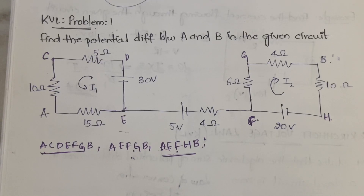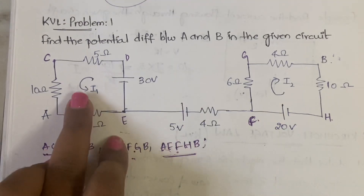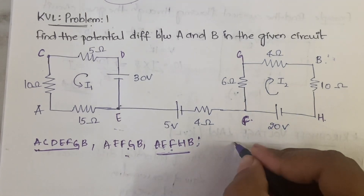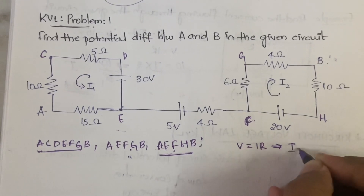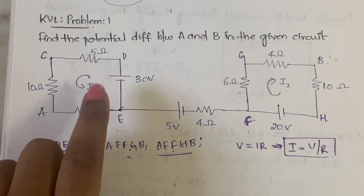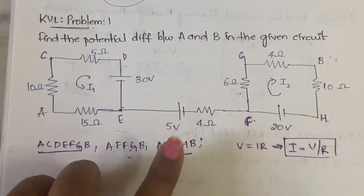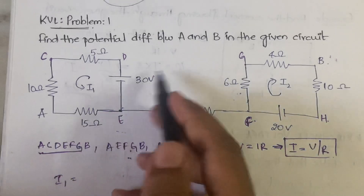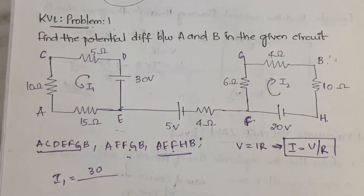Once you have selected the path, the next step is to calculate the current. We have I1 and I2, and we need to know their values to do the calculation. We find I1 and I2 using Ohm's law: V = IR, so I = V/R. In the first loop, there is only one voltage source, so I1 = 30 divided by the equivalent resistance.